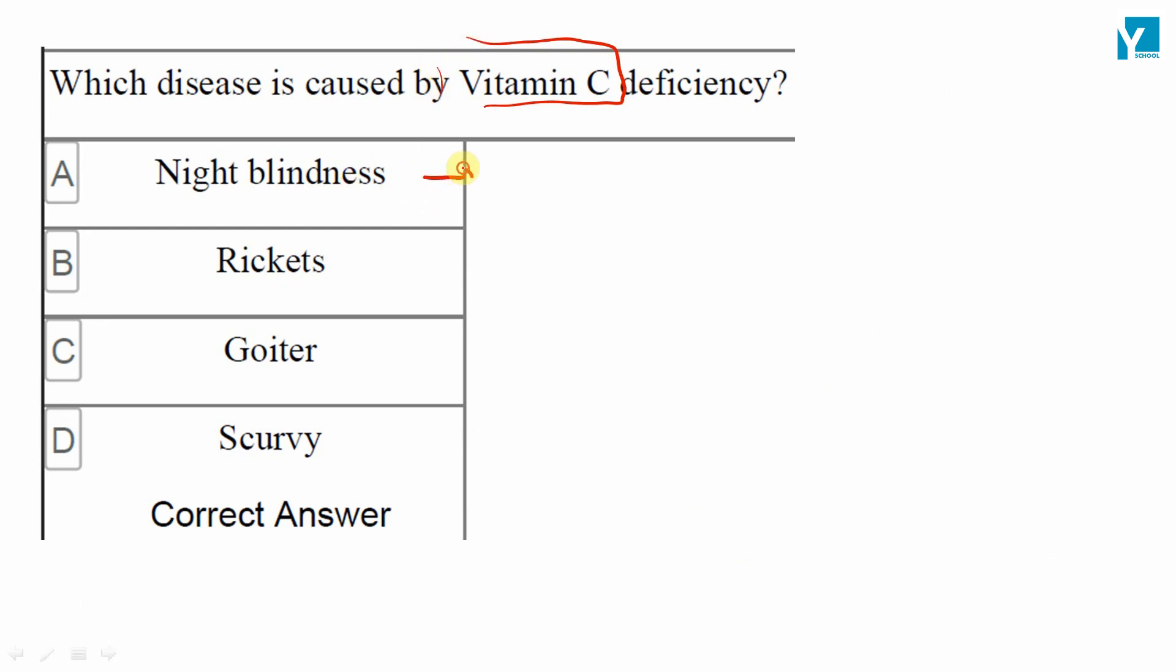Night blindness is caused by the deficiency of vitamin A. Rickets, vitamin D. Goiter is caused by the deficiency of iodine.